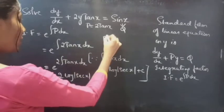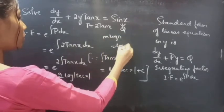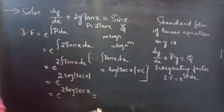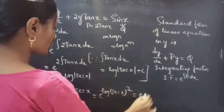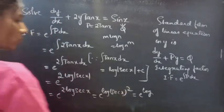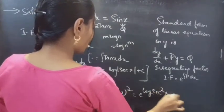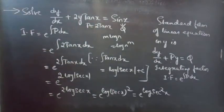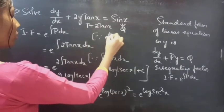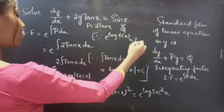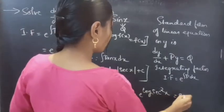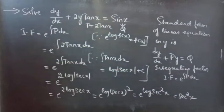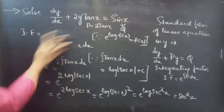Since integral tan x dx equals log|sec x|, we get e to the power of 2 log|sec x|. We know that m·log n can be written as log n^m, so 2 log|sec x| equals log(sec x)². This gives e to the power of log(sec²x), and since e^(log f(x)) equals f(x), our integrating factor is sec²x.